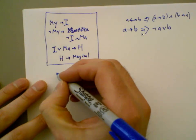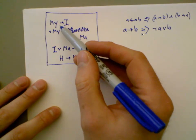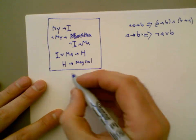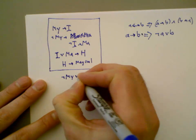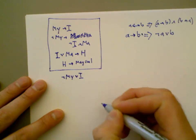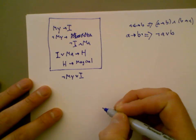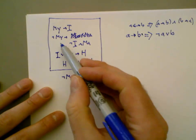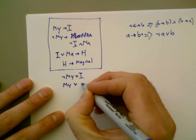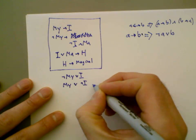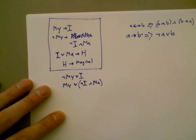The first one becomes: mythical implies immortal becomes not mythical or immortal. Exactly — not mythical or immortal.